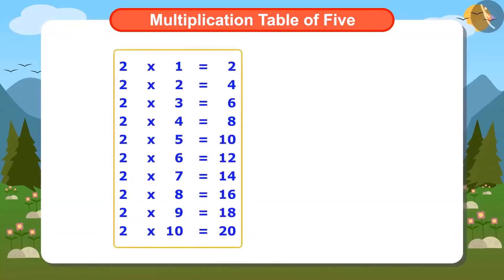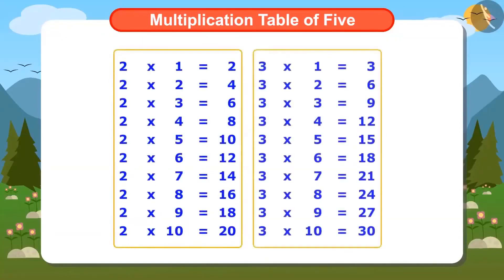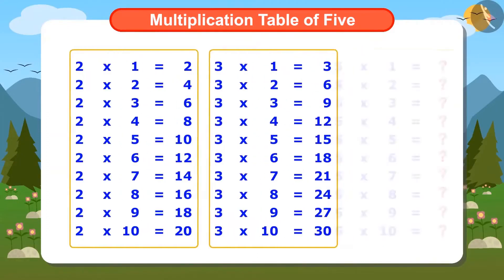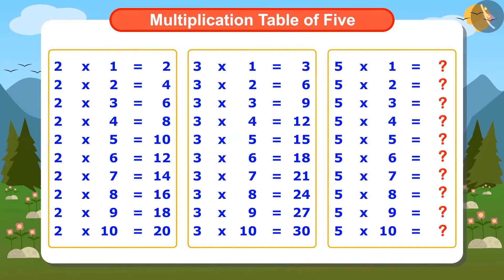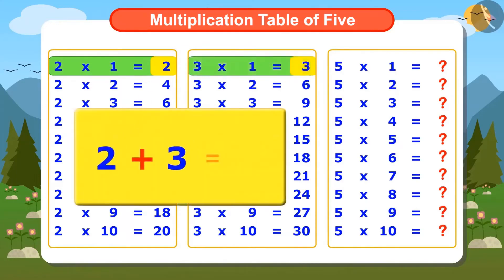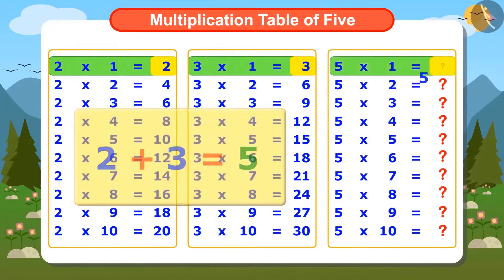Look, this is the multiplication table of 2 and this is the multiplication table of 3. Now I will write the table of 5 using these. First I will also write the multiplication table of 5 so it will be easy to check if it is correct. See — 2 multiplied by 1 is 2, and 3 multiplied by 1 is 3. Add 2 and 3, the answer is 5. So we write 5 multiplied by 1 is 5.